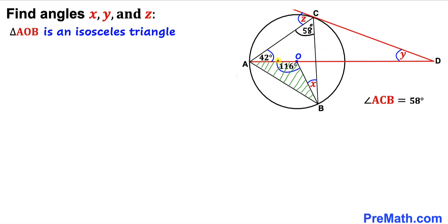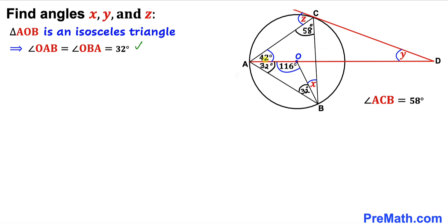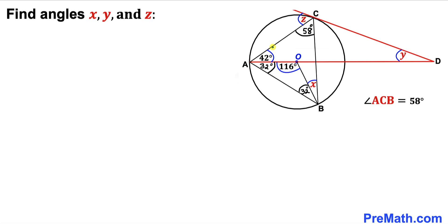Next, let's focus on triangle AOB. This is an isosceles triangle since both sides OA and OB are radii of the circle. Since it is isosceles, the base angles are equal. The sum of angles in a triangle is 180 degrees, and since the central angle is 116 degrees, each base angle is 32 degrees. Therefore, angles OAB and OBA are both 32 degrees.